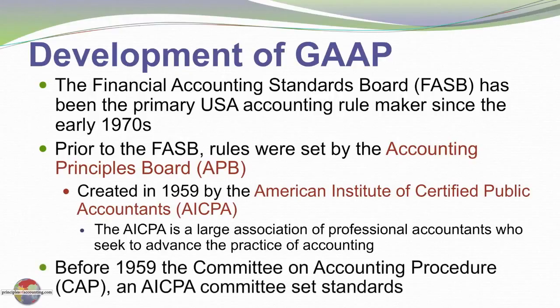Before the late 1950s, the Committee on Accounting Procedure, which was also part of the AICPA, was entrusted with drafting guidelines for accounting practice. They issued a number of accounting research bulletins. Over the many years, they evolved in terms of their relative weight of authority — in their earliest form they were essentially guideposts that over time took on greater weight and credibility.